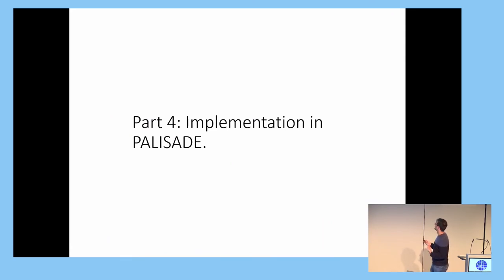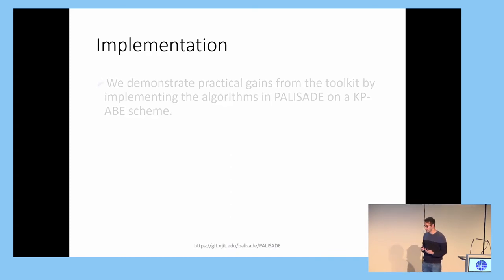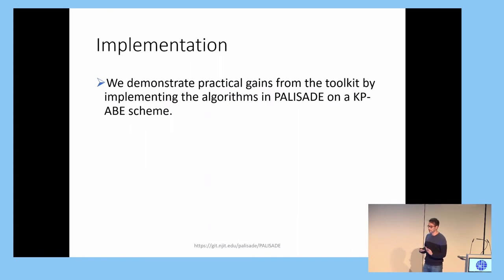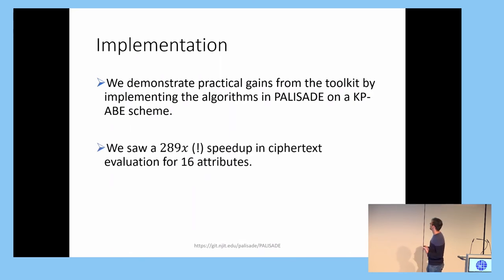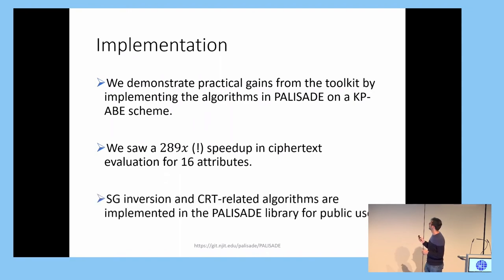Lastly, I'm going to talk about our implementation in Palisade. So in our paper, we implemented a key policy ABE scheme, and used our algorithms in this implementation. There are two reasons for doing a KPABE scheme. First, is that this is often used to build on top, to make more advanced lattice-based schemes, and also, the implementation uses every algorithm that we describe in the paper. So when we have our attribute vectors 16 bits, we saw almost 300 times speedup for ciphertext evaluation. And lastly, I'd like to point out that all of these algorithms are implemented in Palisade, so they're available for public use, and we ask that you use them, download them, and tell us how they're working. Thank you.